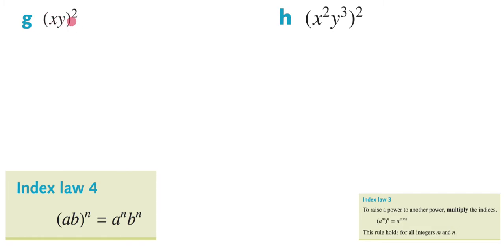So I have X, Y raised to the second power. And as you can see, this power of 2 is outside my bracket. So what I'm going to do is bring it in. So it's going to be X raised to 2 and Y raised to 2. And that's going to be my answer. Nice and easy.